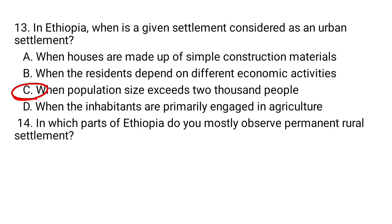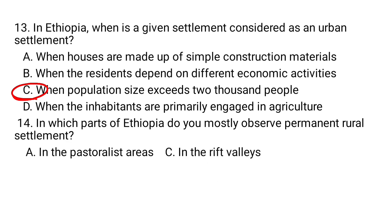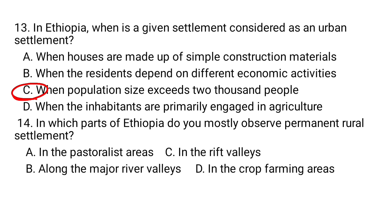Question number 14. In which parts of Ethiopia do you mostly observe a permanent rural settlement? A. In the pastoral areas. B. Along the major river valleys. C. In the rift valleys. D. In the crop farming areas. In the crop farming areas of the highland parts of Ethiopia, there is permanent settlement. D is correct.